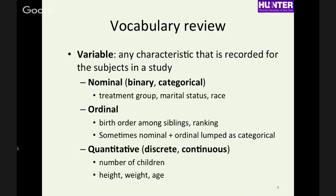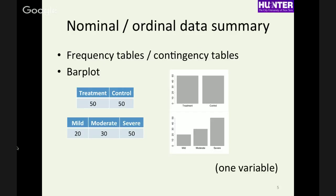I'm grouping discrete and continuous into the single category of quantitative variables, meaning that the rules of arithmetic apply to them, because the distinction between discrete and continuous can be a little fuzzy. We covered summaries of nominal and ordinal data: frequency tables are a mainstay of epidemiological papers — table one of almost any epidemiological study will basically be a nicely formatted table of frequencies.